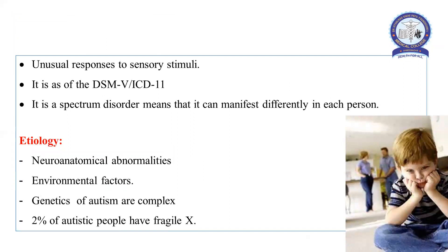Autism is an unusual response to sensory stimuli. As per DSM-5 and ICD-11 classification, it is a spectrum disorder, meaning it can manifest differently in each and every person.